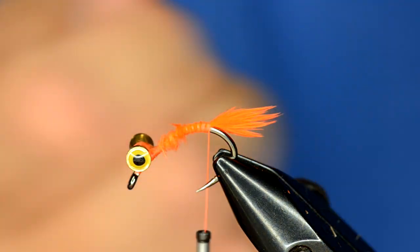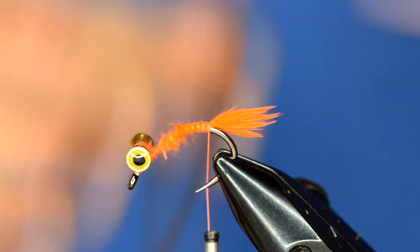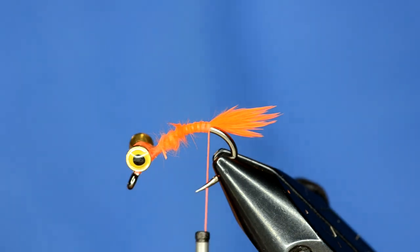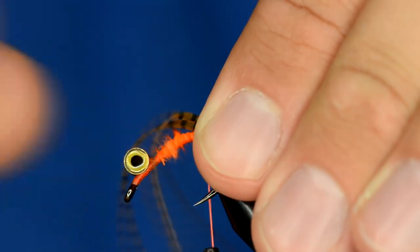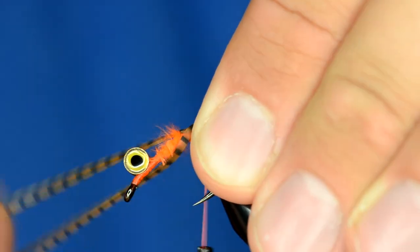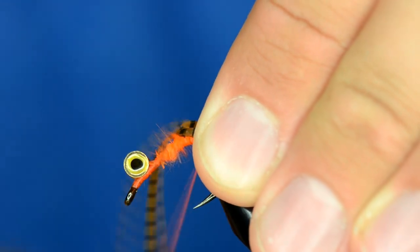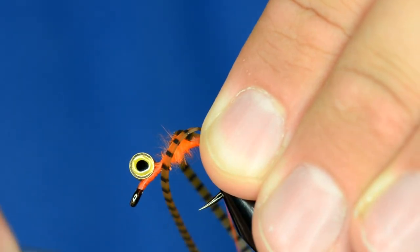So I'm just going to take one of these bad boys and double it over, kind of fold it on top of itself kind of like that and I will tie both of those in on that side of the hook.